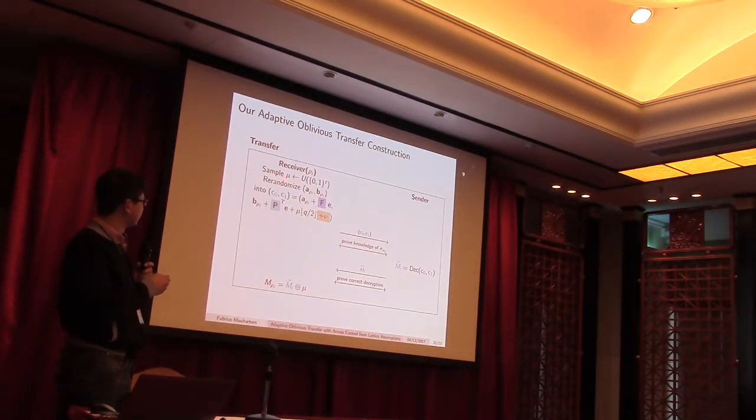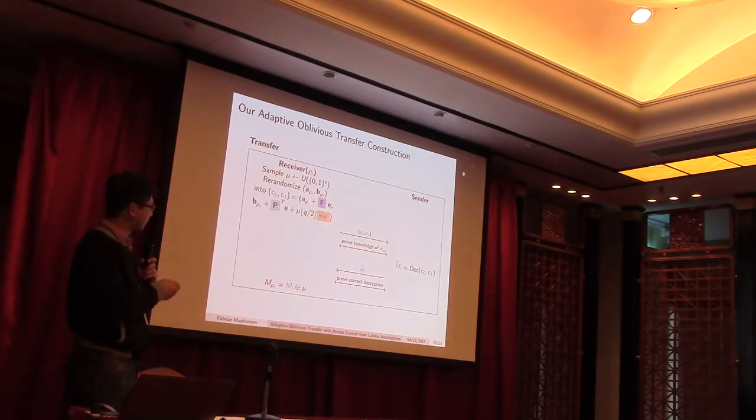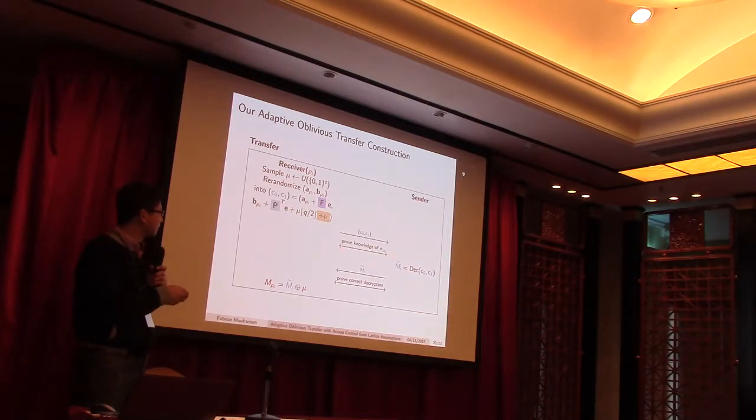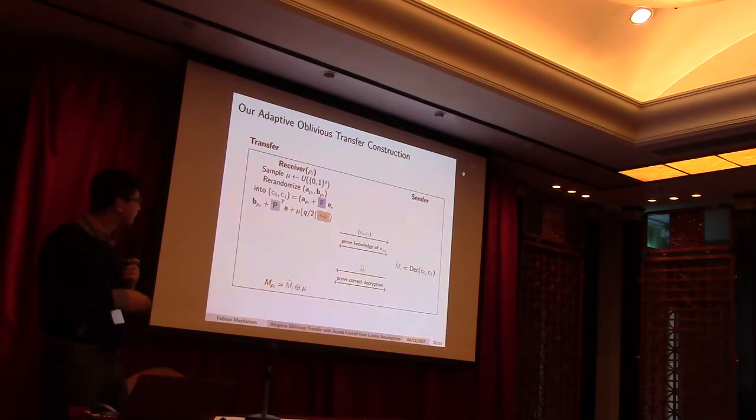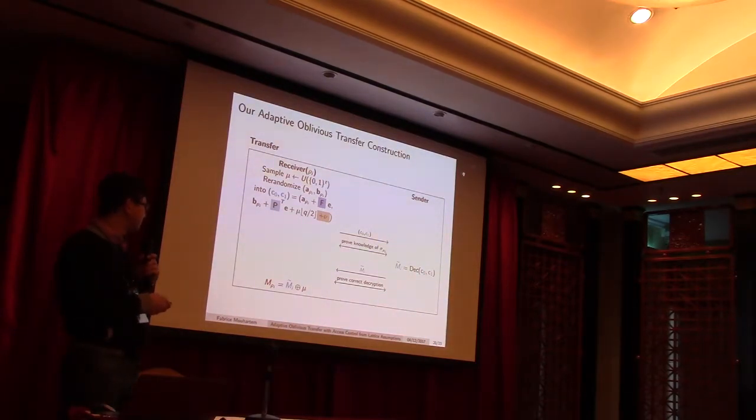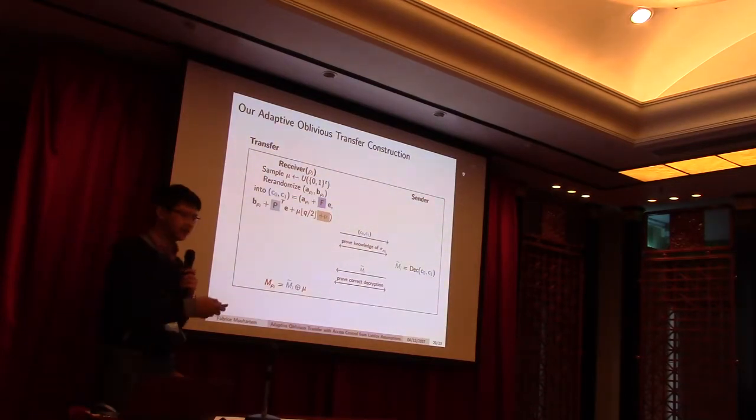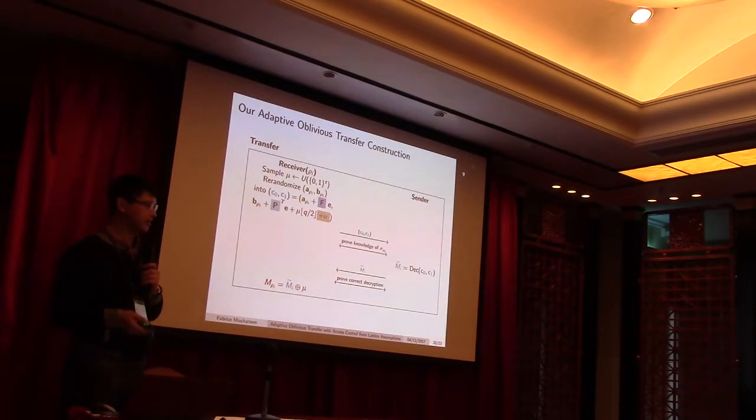So, to do this, it samples this one-time pad, randomizes the message using the smudging, adding the flooding term, sends everything to the sender and proves that it indeed knows a signature for ROI for one of the messages without revealing which one. Then, the sender decrypts it and proves that it indeed did a correct decryption, also using the signature reception protocol, also using the companion protocol.